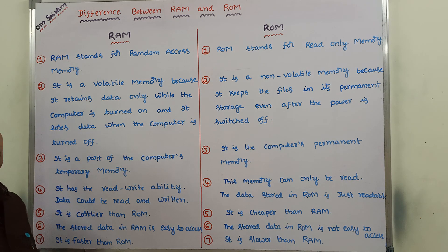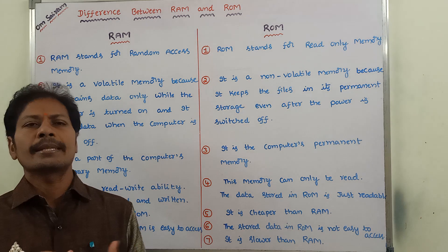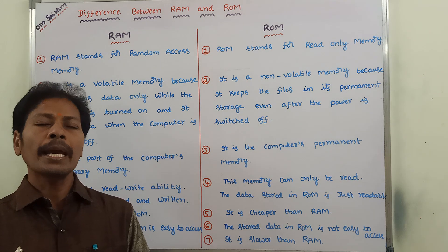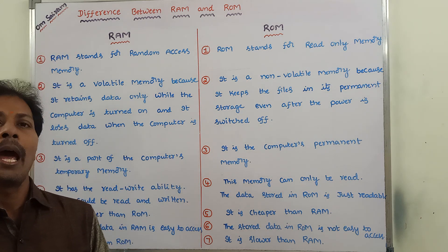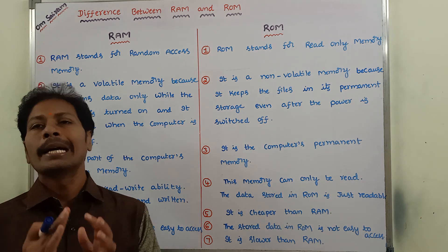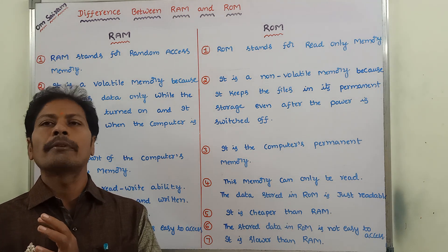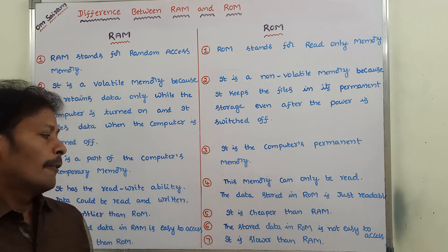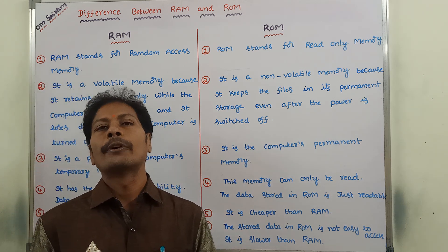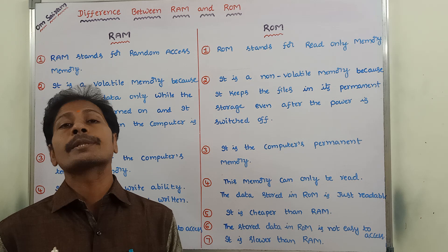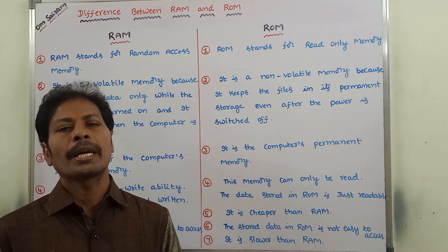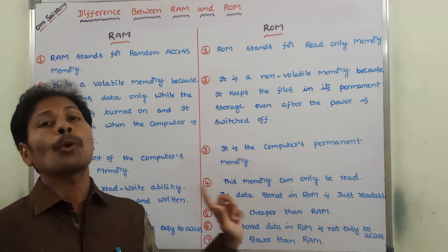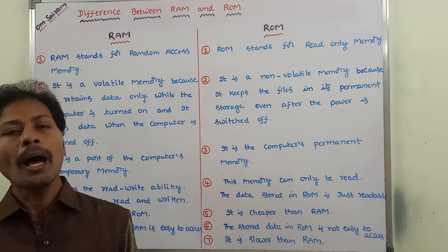Seventh point: RAM is a high-speed memory, hence it is faster when compared to ROM. Whereas, in the case of ROM, it is a slower memory — slower when compared to RAM.